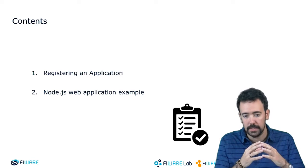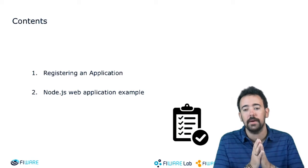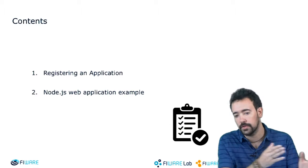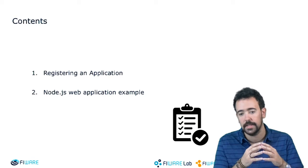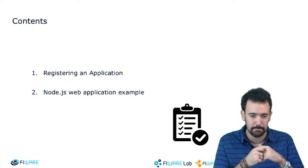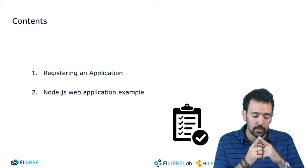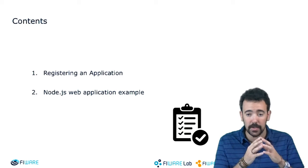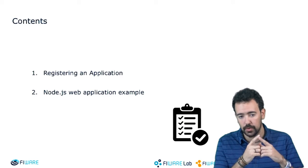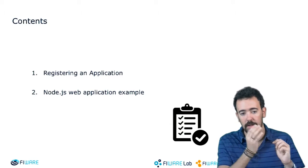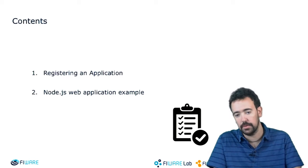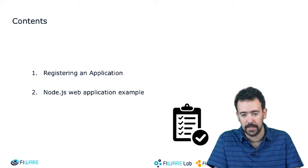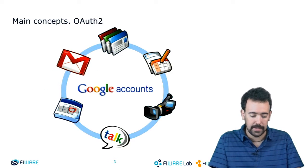As always, I'm going to work in the FIWARE lab environment, but of course if you have your own KeyRock instance you can do the same things. To show you how to create OAuth2 tokens, I'm going to work with a Node.js example that we provide and which you can download and test.